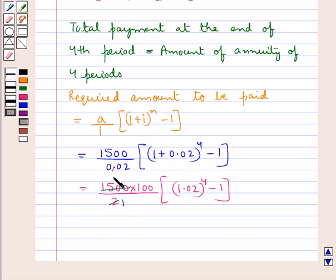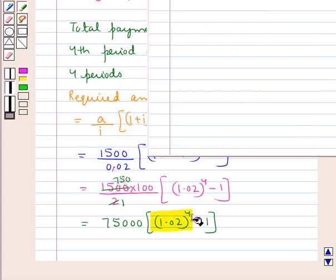750 times 2 is 1500, so we have this is equal to 75000 × [(1.02)^4 - 1]. Let's now find out the value of this.